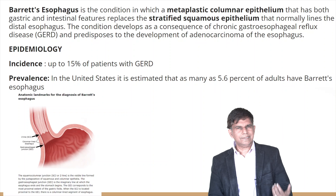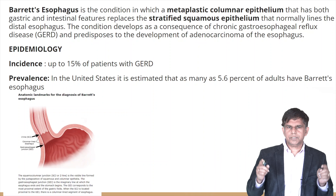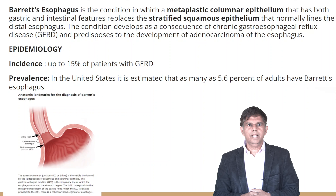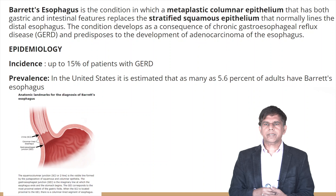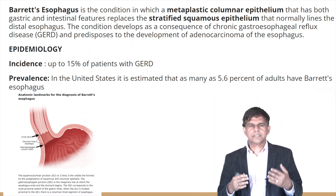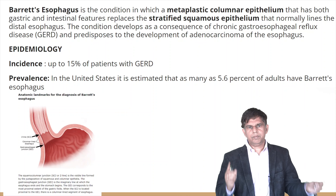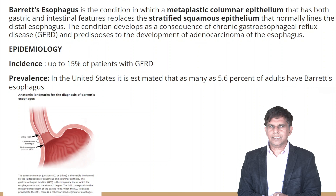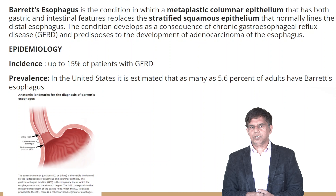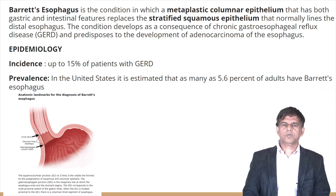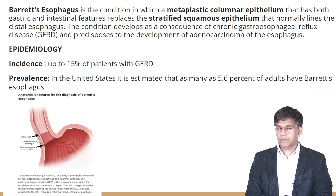Barrett's esophagus is one of the deadliest complications of heartburn or gastroesophageal reflux disease. The most important thing to know is the cell type: what happens is metaplastic columnar epithelium replaces the stratified squamous epithelium that normally lines the distal esophagus. Always remember — the normal stratified squamous epithelium is gone, replaced by metaplastic columnar epithelium. When you hear metaplastic, think malignancy.